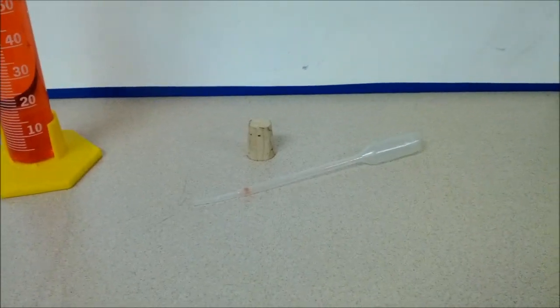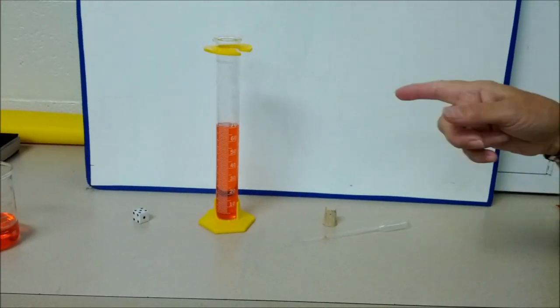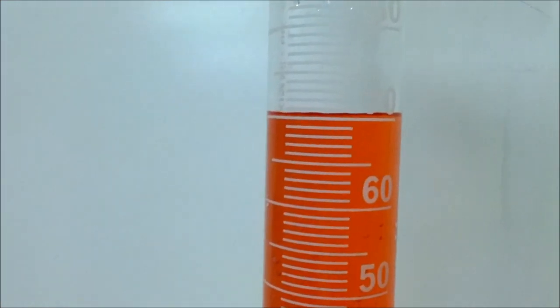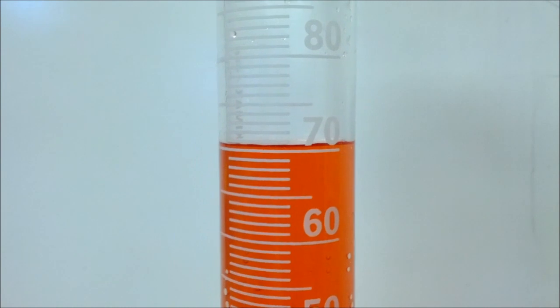Okay, so we're going to take this cork and put it in. We've got to figure out where we are. All right, let's take a look here. The bottom of our meniscus is right at 70 milliliters. Okay, good.